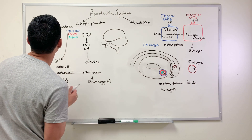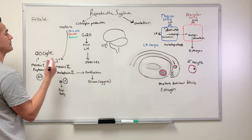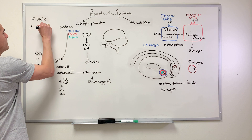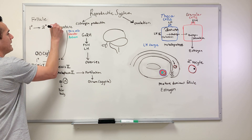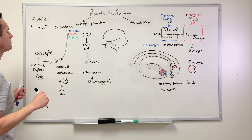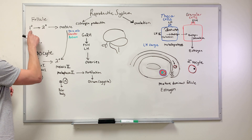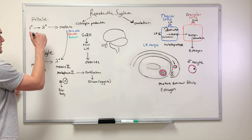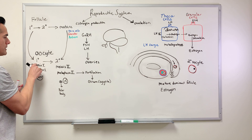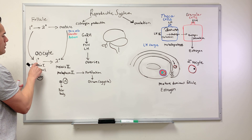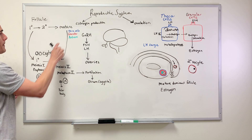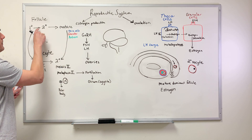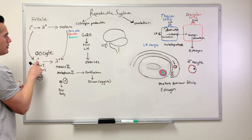The follicle goes through a couple of different stages: it starts as a primary follicle, becomes a secondary follicle, and finally becomes a mature follicle. In both the primary and secondary follicle we have the primary oocyte. The key takeaway is that the mature follicle contains the secondary oocyte, while the primary and secondary follicles contain the primary oocyte.